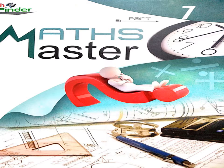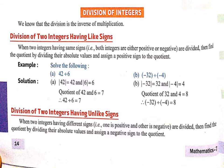First, Division of Integers. Division of two integers having like sign: when two integers having the same sign — both are positive or both are negative — are divided, then find the quotient by dividing their absolute values and assign a positive sign to the quotient. In this situation, यदि हमारे दोनों integers positive होंगे तो हमारे quotient जो है वो positive में ही आएगा। और यदि हमारे दोनों integers negative में हैं तो तब भी हमारा quotient positive में ही आएगा।